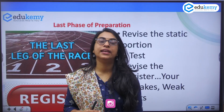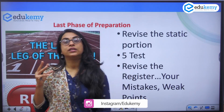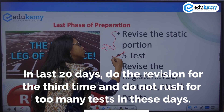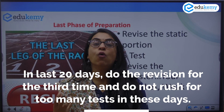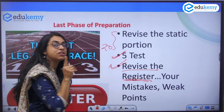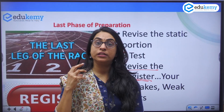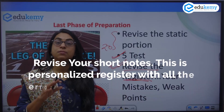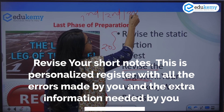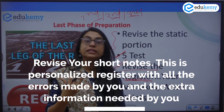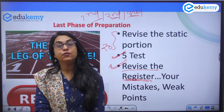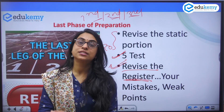The third and final phase is the last 20 days. Revise the static portion again and do not rush for tests in this last leg — only write about 4 to 5 tests, otherwise you will become either too overconfident or too underconfident. Most importantly, revise the register in this phase. This register contains your weak points, your weaknesses, and your mistakes — it is very individualized to you. The register should also be revised at the end of each phase: second phase, revise the register; third phase, revise the register — so the register gets revised three times overall.